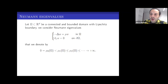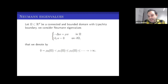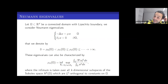I will start mainly by fixing the notation. I take omega to be a connected bounded domain with Lipschitz boundary, and I am interested in the Neumann eigenvalues — the eigenvalues of the Laplacian with Neumann boundary condition. Thanks to the assumption of Lipschitzianity, the spectrum is given by a sequence of eigenvalues, and I will denote by mu zero the first trivial eigenvalue, which corresponds to constant eigenfunctions, and then I have the increasing sequence of eigenvalues.